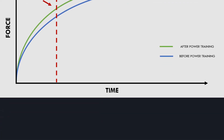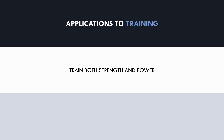So what does all this mean for athletic training? Well essentially, athletes should probably perform both strength training and fast velocity power training. This way, athletes can increase the total amount of force they can produce, and then train to produce this quickly.